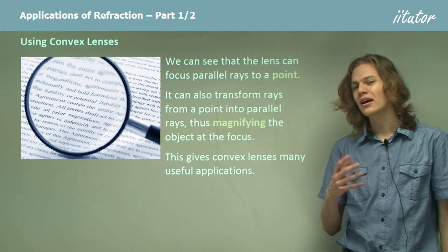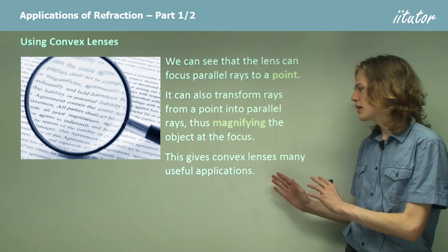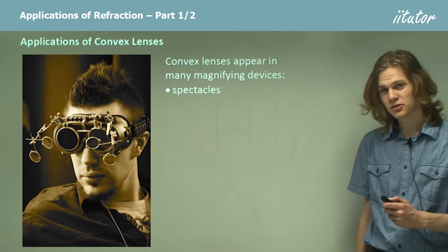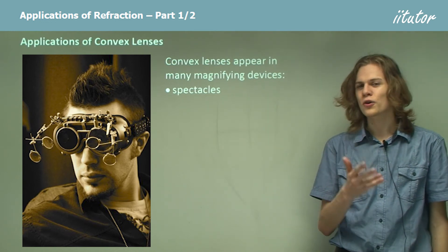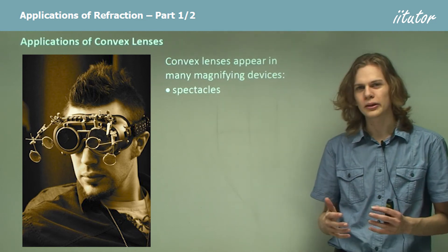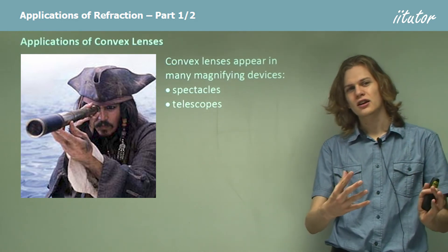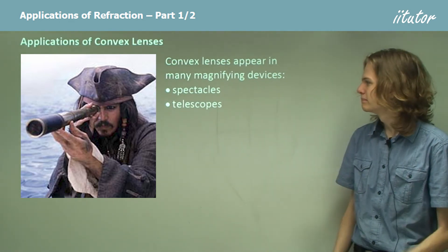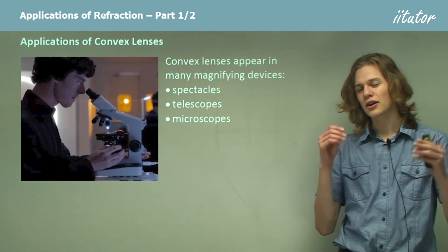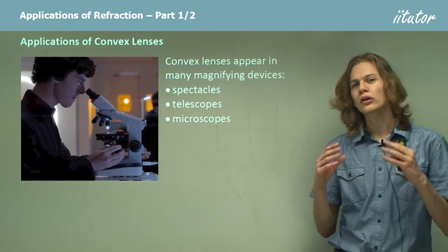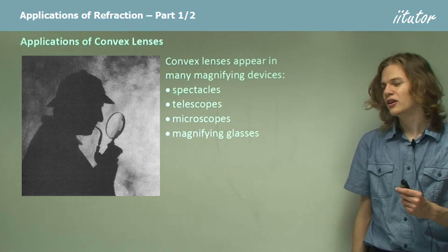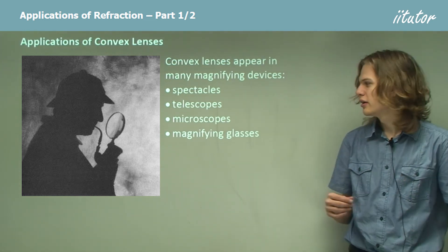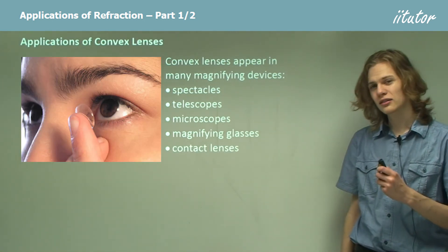This gives convex lenses a number of useful applications. Almost anything that magnifies an image uses a convex lens to do so. So what are some examples? Well, we have spectacles — glasses. If we're not using a concave lens, then we're using a convex lens to focus the light properly. Telescopes allow us to see distant objects by magnifying them, taking parallel light and focusing it to our eyes. Microscopes are used for magnifying very, very small objects, and often they'll use more than one lens to achieve this. Magnifying glasses are another way of magnifying small objects, except because they consist of a single lens, we can't use them to magnify objects to quite the same degree as microscopes.